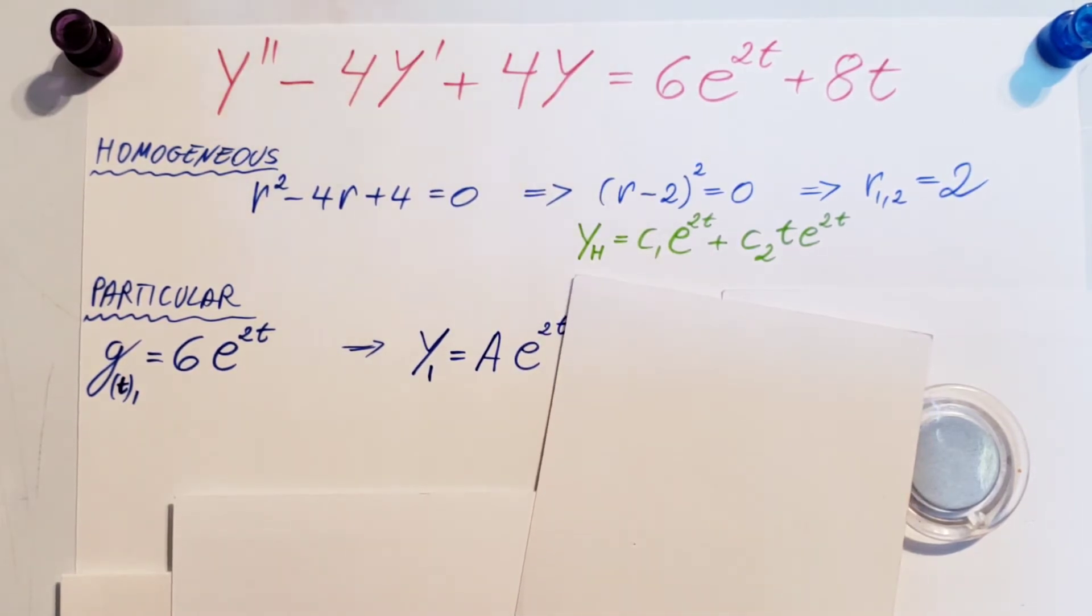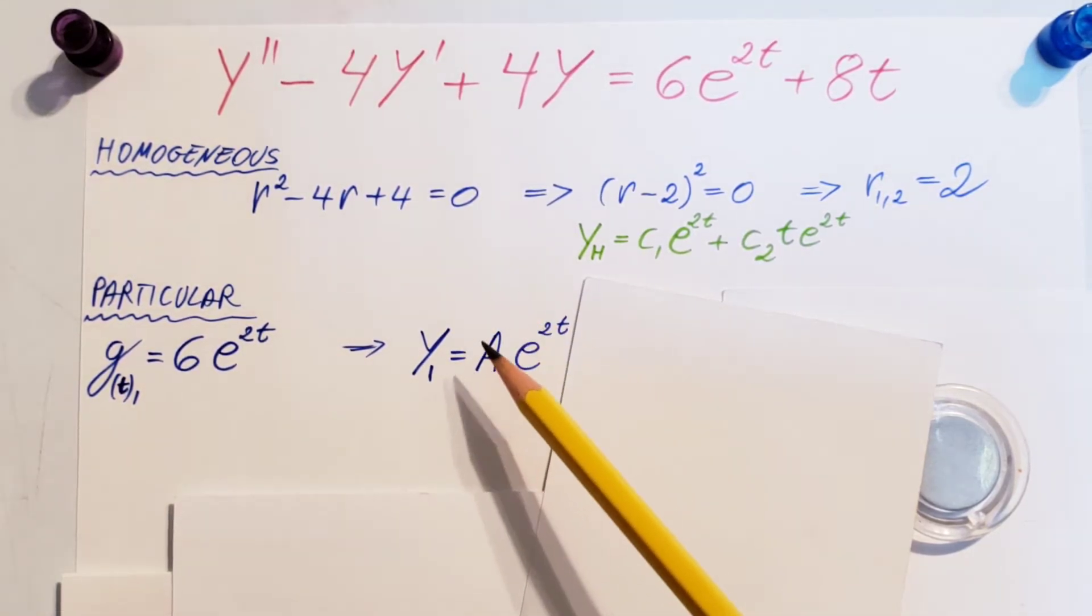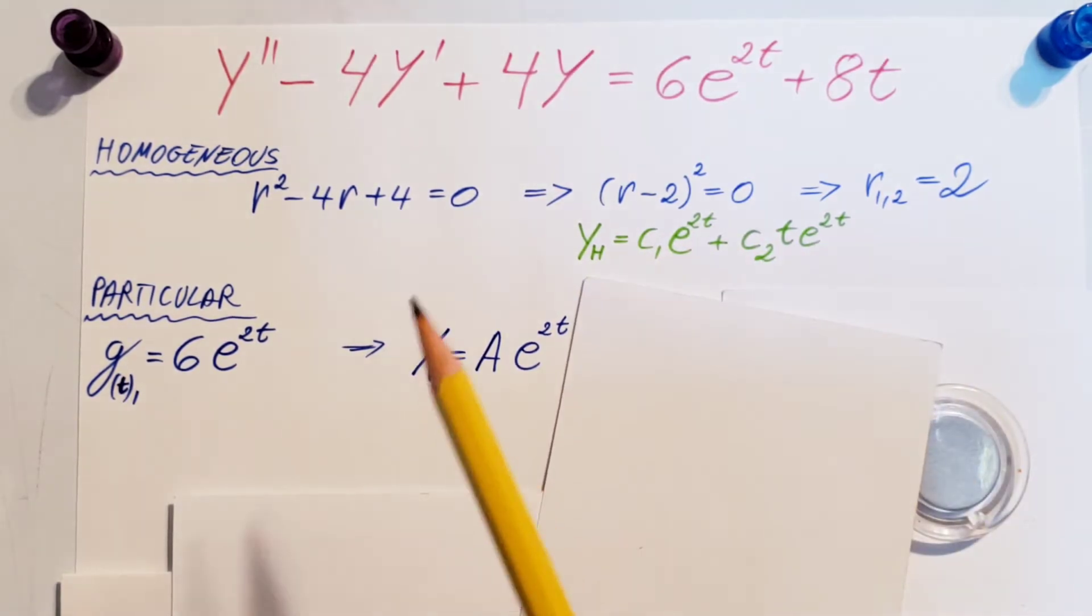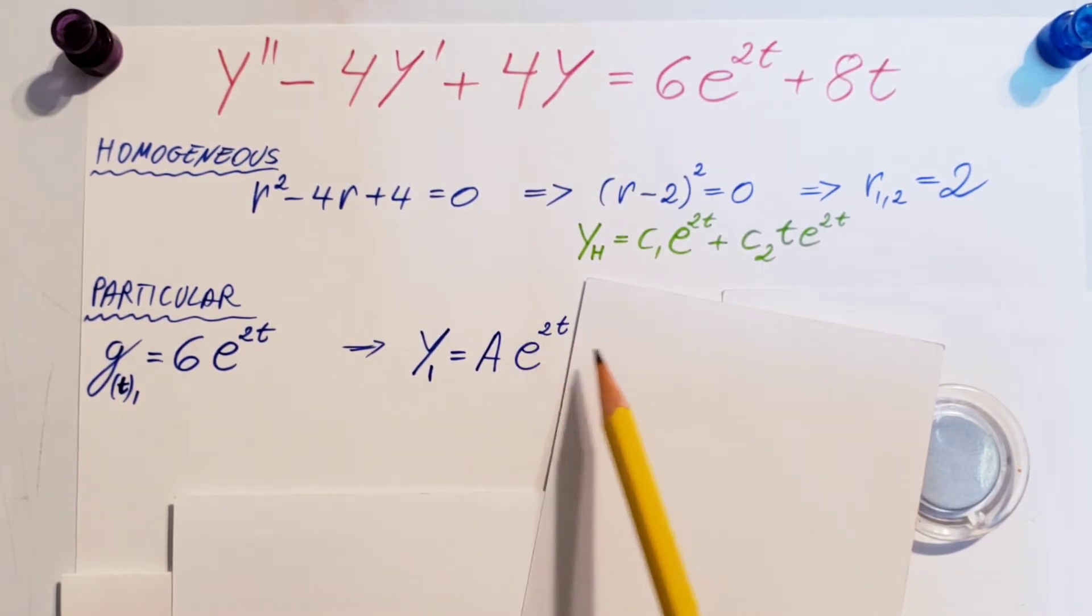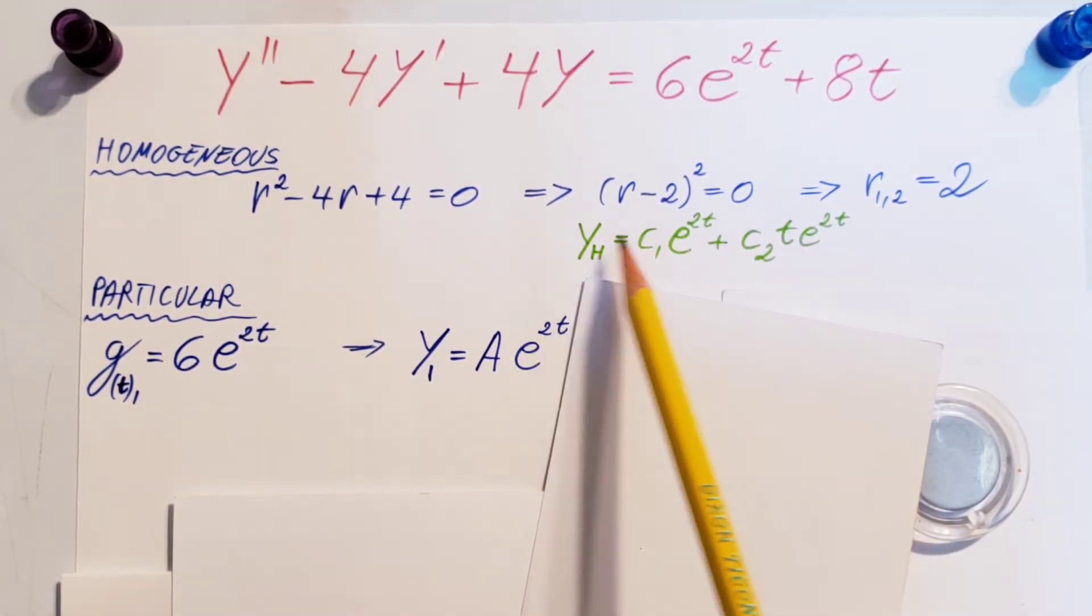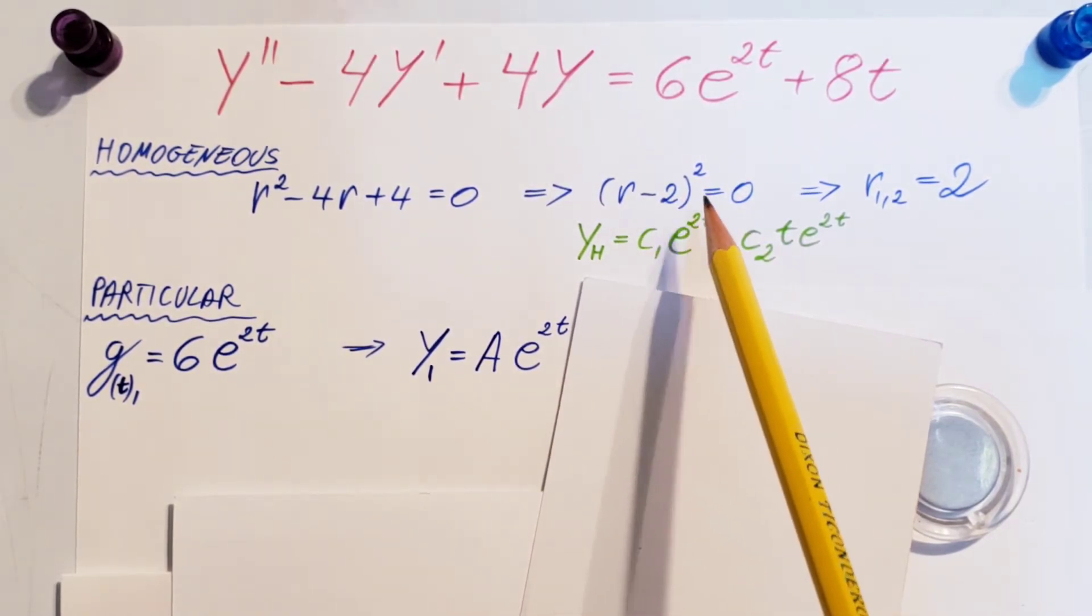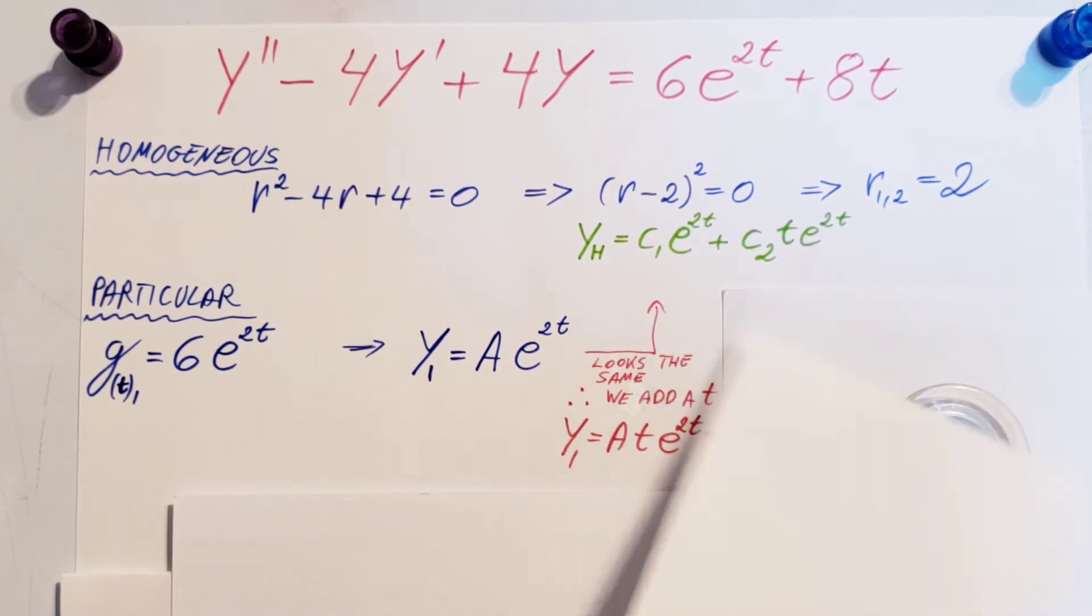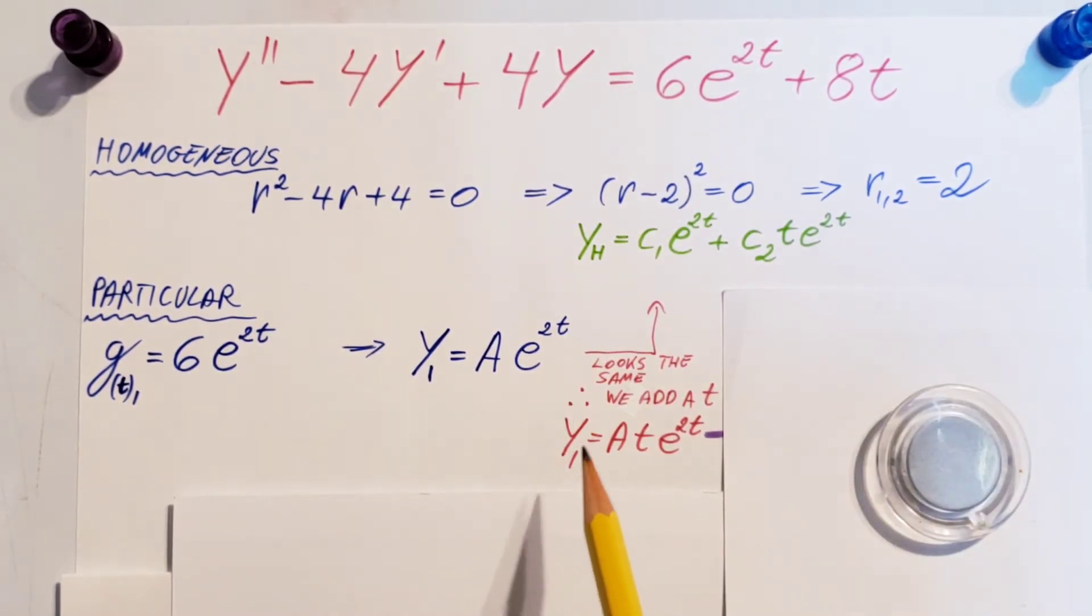This would be all nice and good, but we need to make sure that this will not repeat from whatever we found in the homogeneous equation. And if we take a look at it, we have a constant times e to the 2t. We verify what we have in the homogeneous one, and we see right here, constant times e to the 2t. It's the same. So, that means we will have to multiply this by a t. My new y1 equals At e to the 2t.